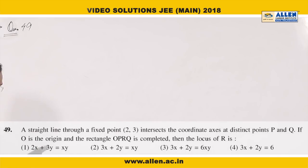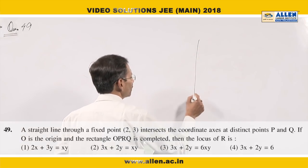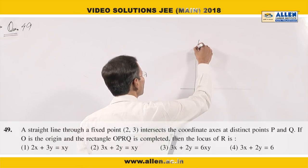Question number 49, very simple problem of straight line and many students would have solved it earlier. A straight line is there passing through fixed point 2 comma 3.